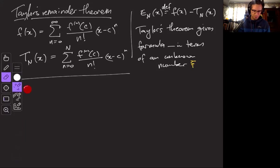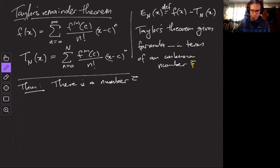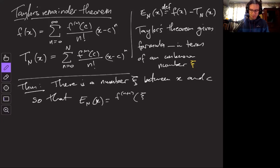So what is this? This is going to be the error term. So actually the theorem says there is a number xi between x and c so that the error term is exactly what you would expect if you took the next term in the Taylor series but you replace c by xi.